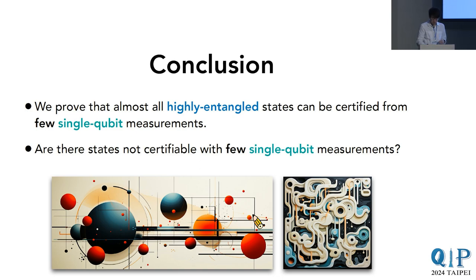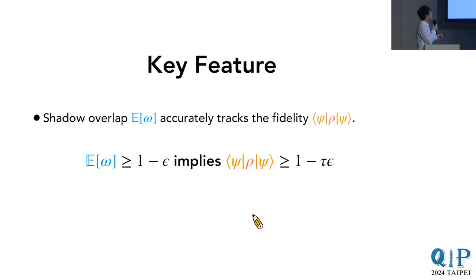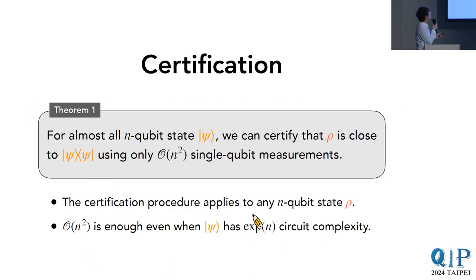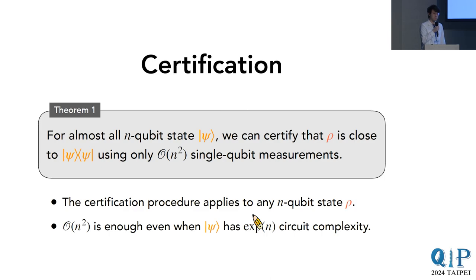Question: When you talk about almost all states, are you talking about under the Haar measure? Answer: Yes, for Theorem 1 we really mean the Haar measure. We believe that as long as the state is complex enough, this would also hold. In principle, there could be sets of states with zero measure under the Haar measure that would not fall into this theorem—for example, specific states like GHZ state. But for GHZ state, if we pick the right basis, we can show the relaxation time is small, so by Theorem 2 it also applies.